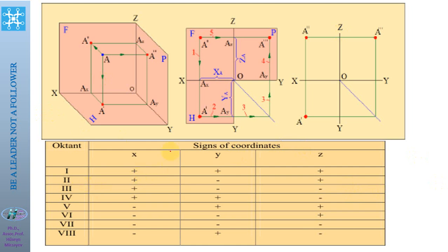For the first quadrant, the X-axis is positive, the Y-axis is positive, and the Z-axis is also positive. For the third octant, X-axis is positive, Y is negative, and Z is also negative. Third octant or third angle projections are mainly used in the USA.